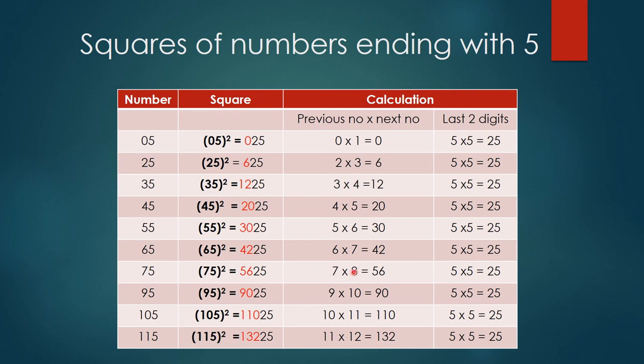7 times 8 is 56, 5625. 9 times 10 is 90, so 9025. 10 times 11 is 110, so 11025. 11 times 12 is 132, so it is 13225.